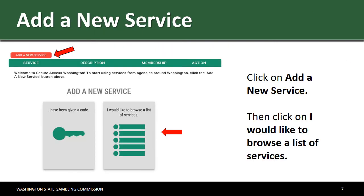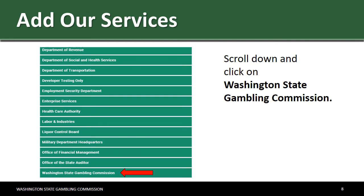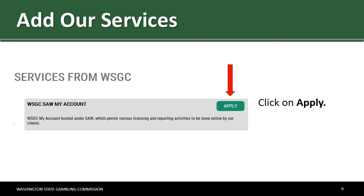Click on Add a New Service, then click on I Would Like to Browse a List of Services. Scroll down and click on Washington State Gambling Commission. Click on Apply.